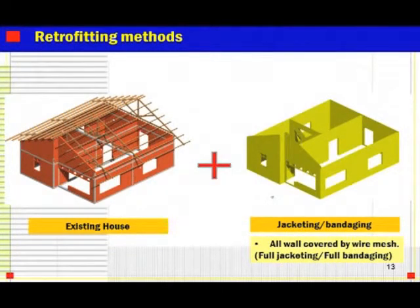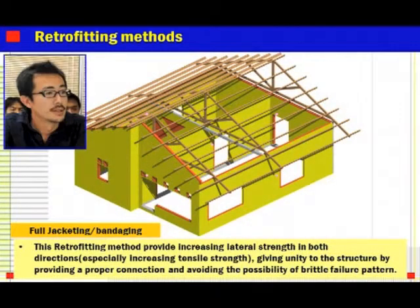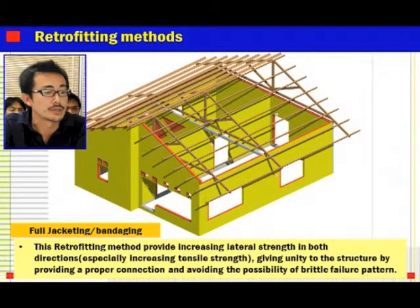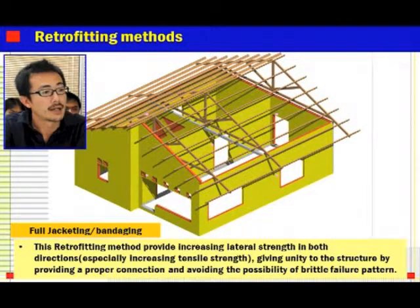This is the retrofitting method. The existing building condition is shown on the left side, and then we add jacketing — also called bandaging — it is the same method. All walls are covered by wire mesh: full jacketing, full bandaging. After jacketing, this retrofitting method provides increasing lateral strength in both directions, especially increasing tensile strength, gives unity to the structure by providing proper connections, and avoids the possibility of brittle failure pattern.